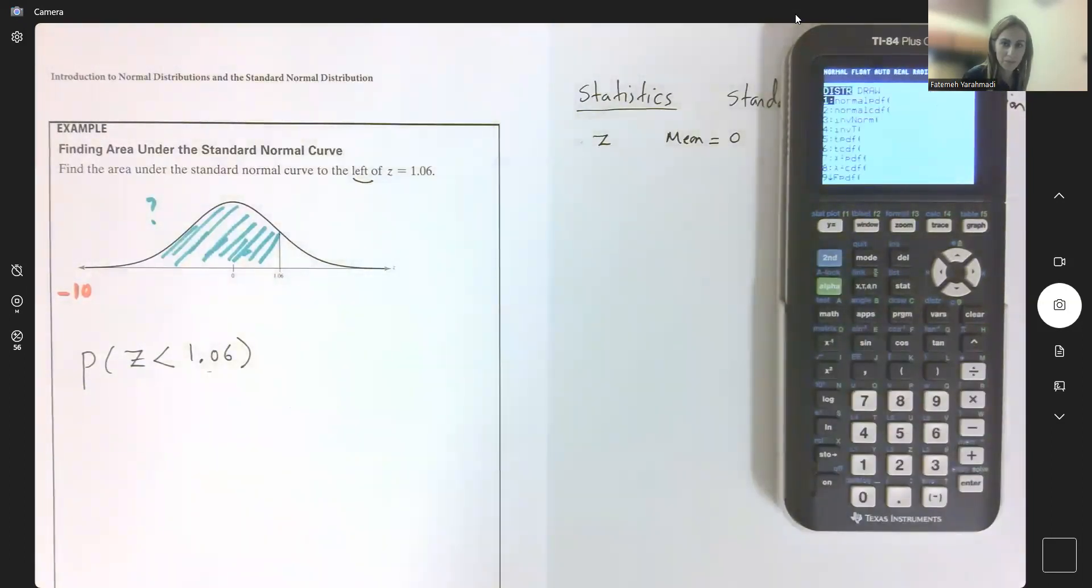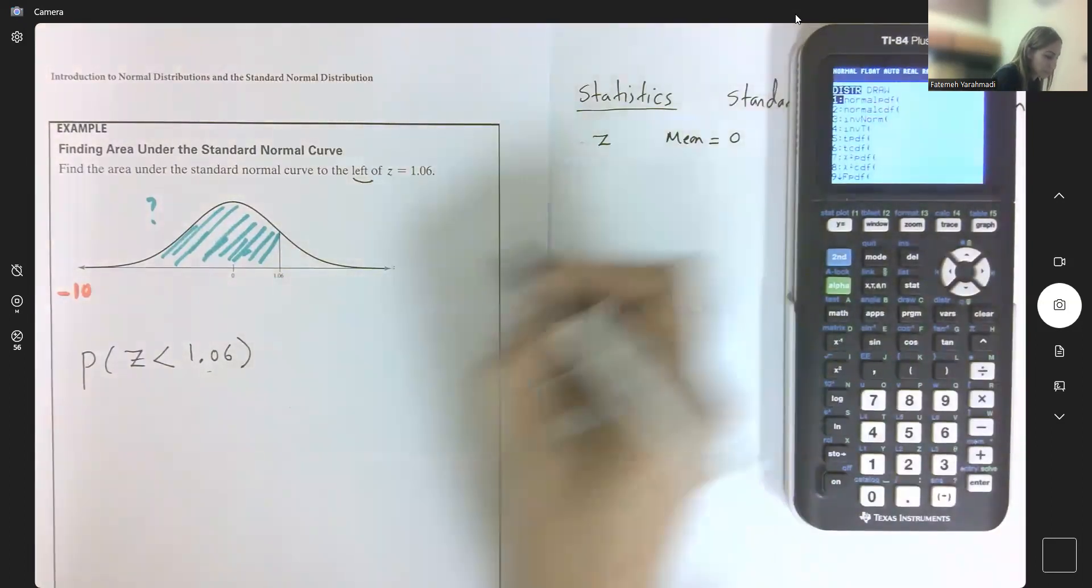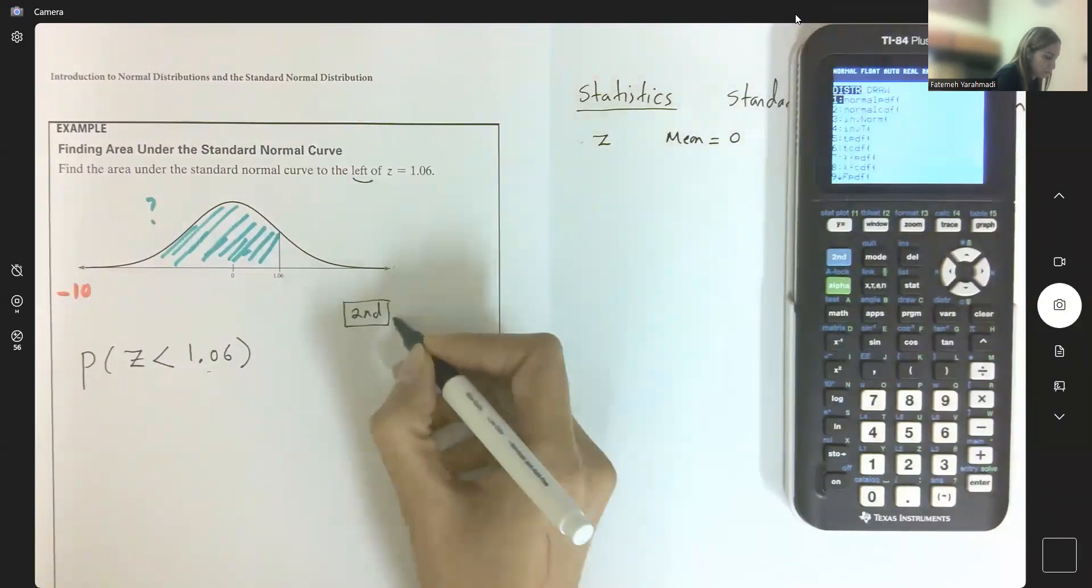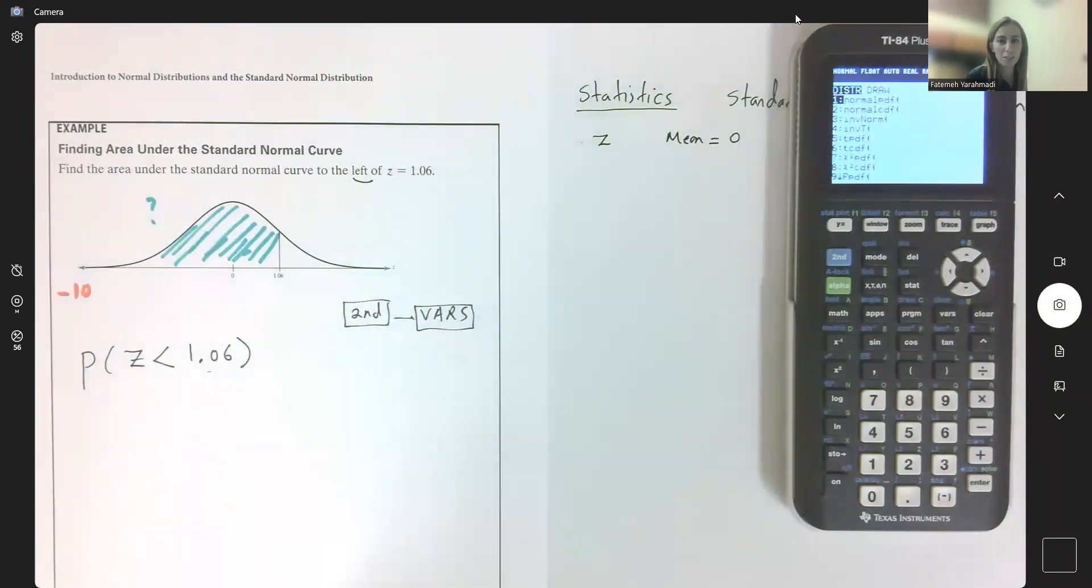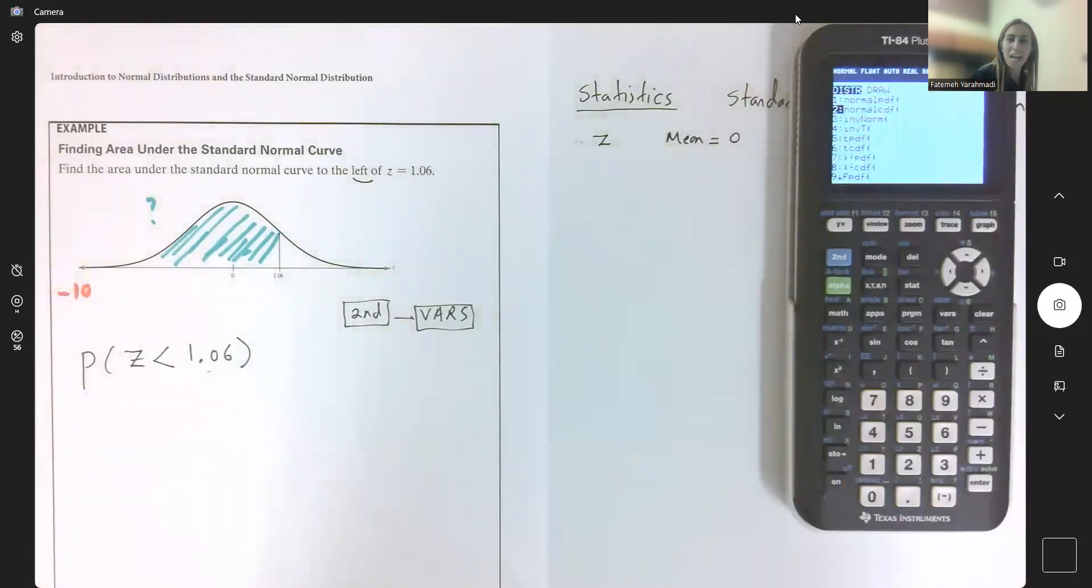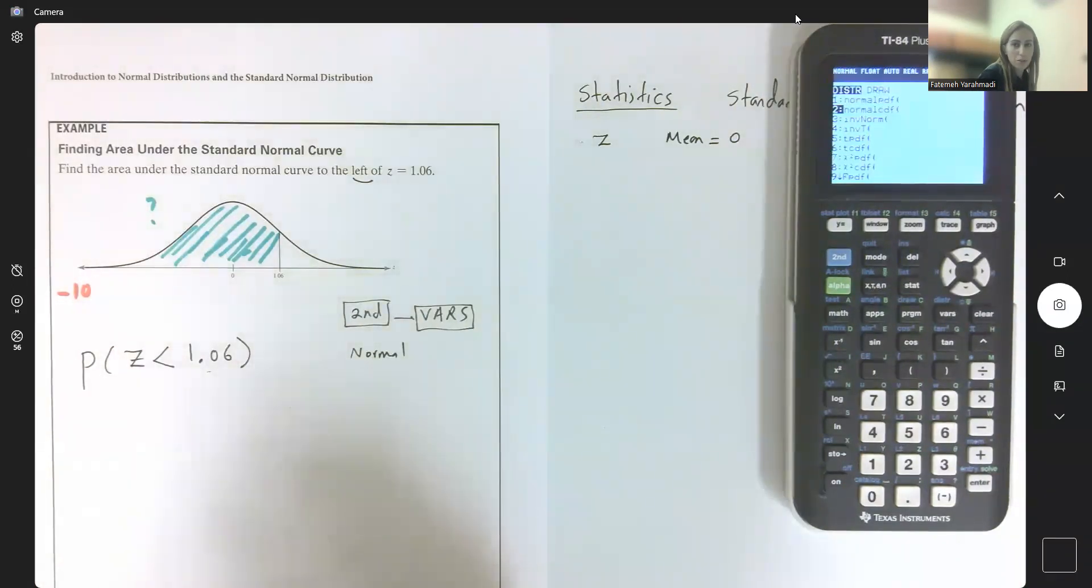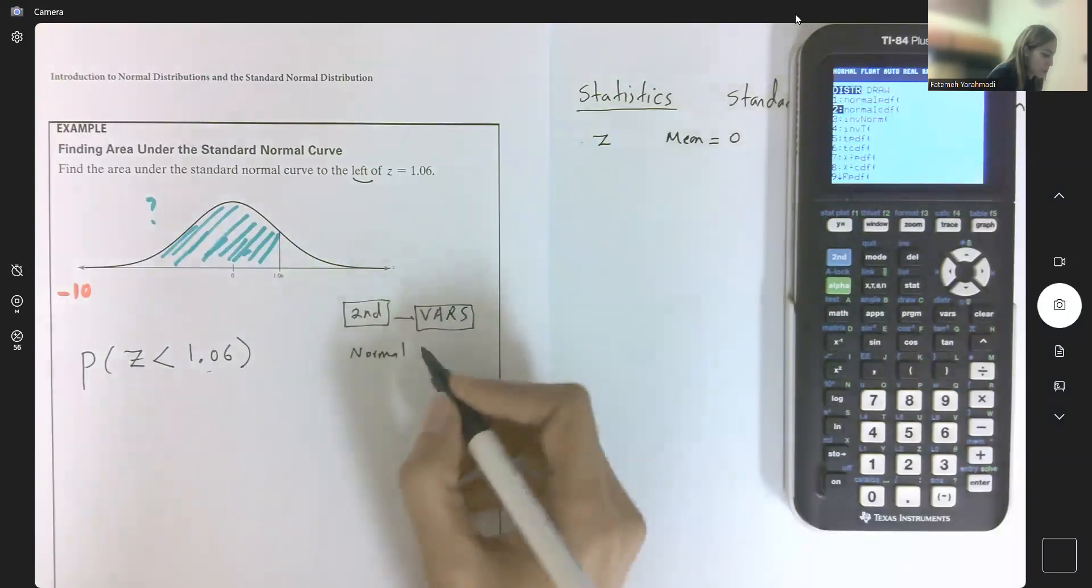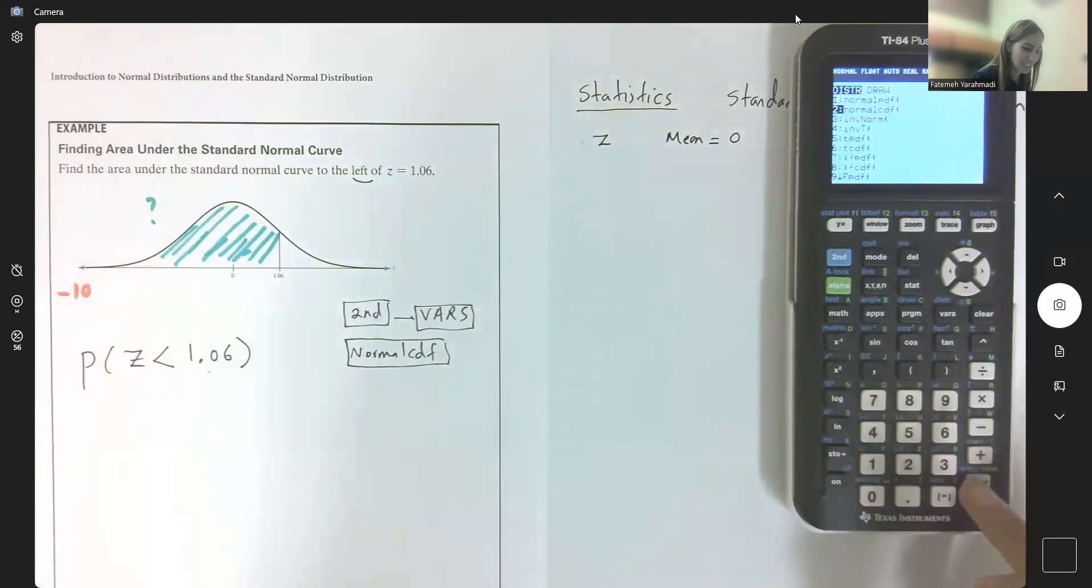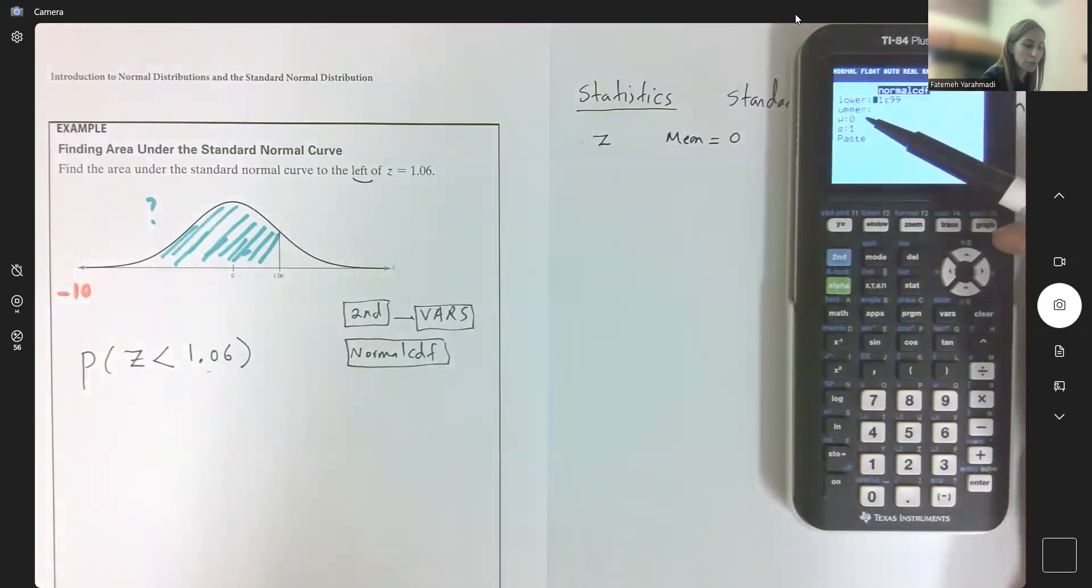In this case, we're going to go to second VARS. Then you're going to find the normal cumulative density function, normalcdf. Remember that we are not working with binomial anymore. We moved to a new distribution, normalcdf.